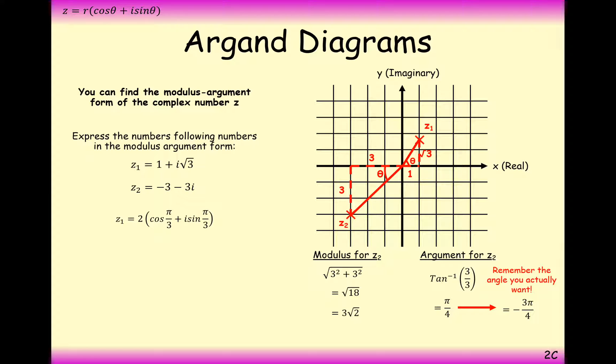And then all that's left for us to do is to write it in modulus argument form. So replace the r with 3 root 2 and replace the theta with minus 3 pi over 4. And that's our final answer to this question here then.